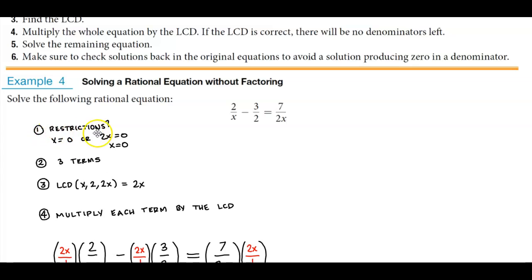Number one, we need to find the restrictions. So all denominators that contain x, we're going to set them equal to zero and solve for x. We have x equals zero in the first denominator. The third denominator is 2x equals zero, which ends up giving us x equals zero. So we can see that zero is an exclusion or a restriction.